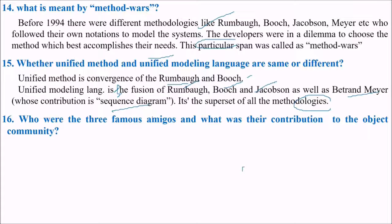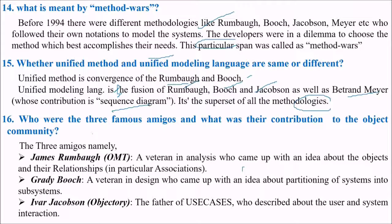What are the three famous amigos and what are their contribution to the object community? We have just known them. Rambo, James Rumbaugh, Grady Booj and Ivar Jacobson. A veteran in analysis who came up with an idea about the objects in their relationship, in particular the associations. Grady Booj, a veteran in design who came up with an idea about partitioning of systems into subsystems. Ivar Jacobson, objectory, the father of use cases, who described about the user and system interaction.